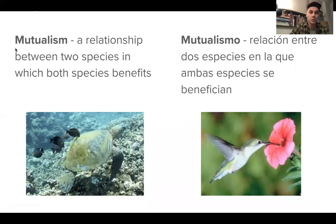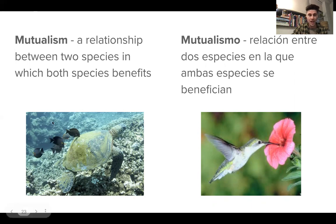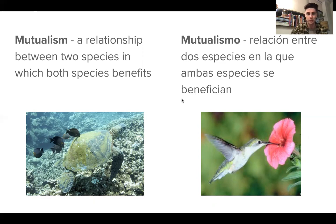Next we have another relationship: mutualism. Mutualism is the relationship between two species where there is a benefit for both of them. For example, a turtle and fish — the turtle has its shell cleaned by the fish, which is good for the turtle, and the fish get algae to eat, which is good for them. Another example is the hummingbird and the flower: the hummingbird gets nectar for food, and the flower gets pollen shared to other flowers, causing new plants to grow. Both organisms receive a benefit in mutualism — you can remember it because it's mutually beneficial.